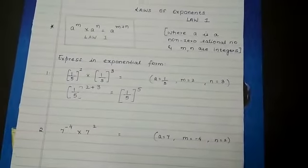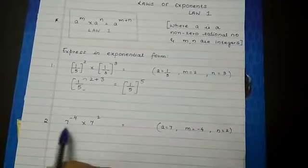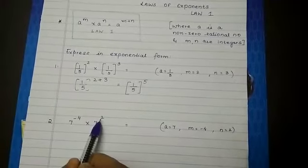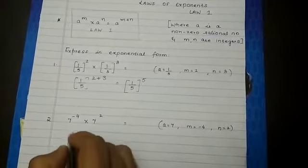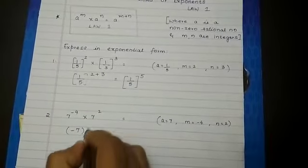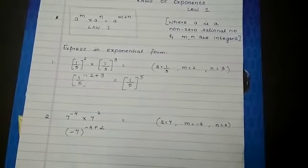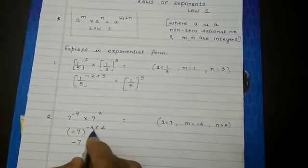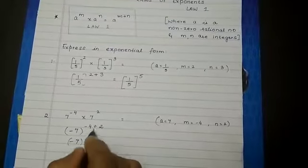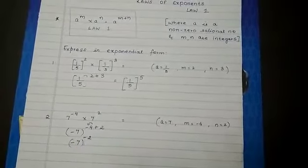Let us go to the next sum. 7 raised to minus 4 into 7 raised to 2. Now here a is 7, m is minus 4, and n is 2. So what is our law? So if there is 1 plus and 1 minus you have to subtract and put the sign of the greater number. So it is minus 2.